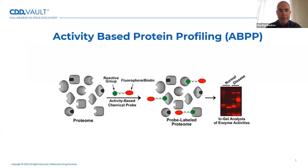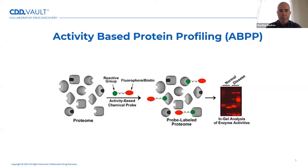The advantage this affords for understanding proteins and their relevance in some biology or disease state is obvious. At a high level, the cartoon you see here depicts a typical approach. You have a complex proteome, and a specific member or a particular class of targets is targeted with a reactive active-site probe that allows for visualization — like a dye is attached — or enrichment, like a biotin is attached. Following labeling, proteins can be visualized by in-gel fluorescent scanning, or after enrichment, downstream LC-MS analysis can be performed to tell you what's in your sample. ABPP probes have been developed for numerous different enzyme classes, including hydrolases, metalloproteases, oxyreductases, glutathione S-transferases, and many more.